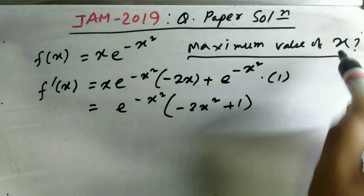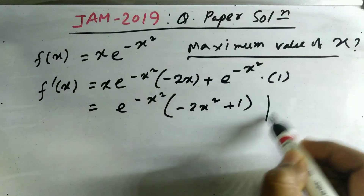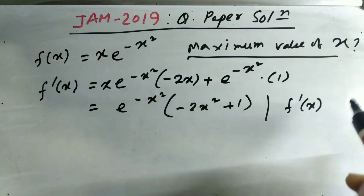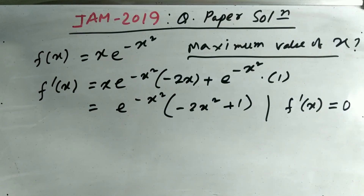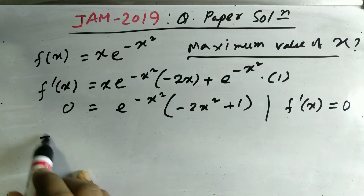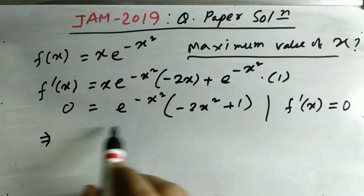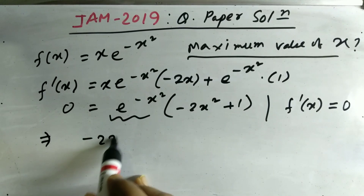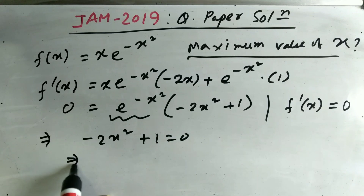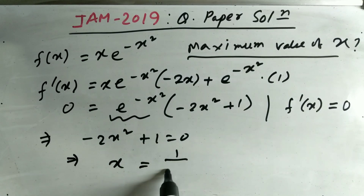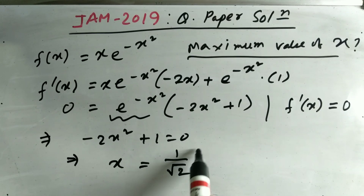The condition to have the maximum value is that f'(x) equals zero. So put f'(x) = 0. From this, the exponential part is never zero, so just set -2x² + 1 = 0, which gives x = 1/√2. So this will be the correct answer.